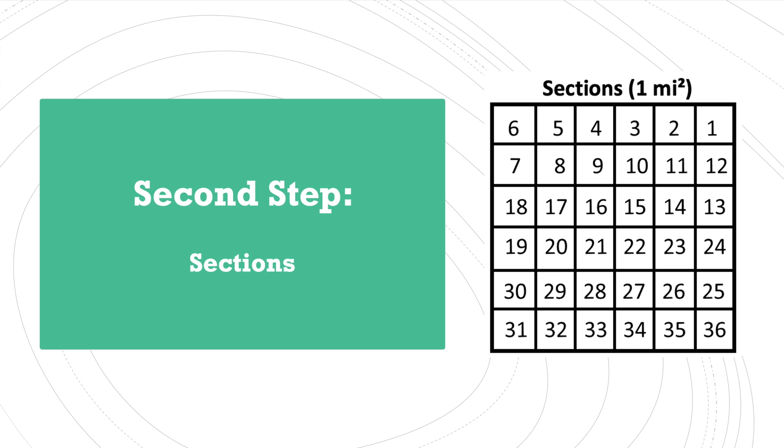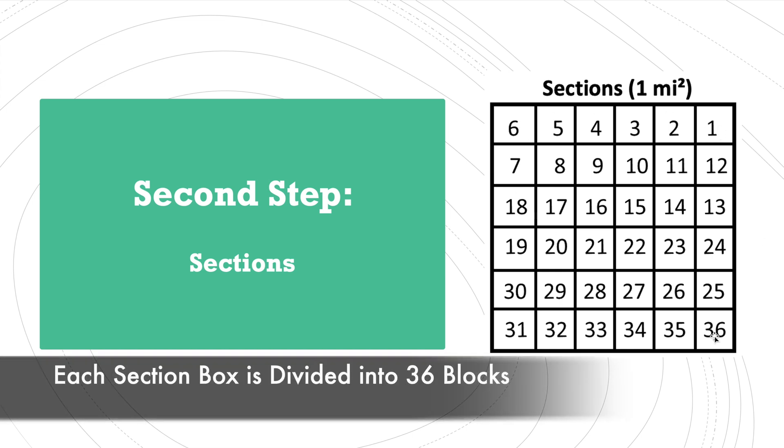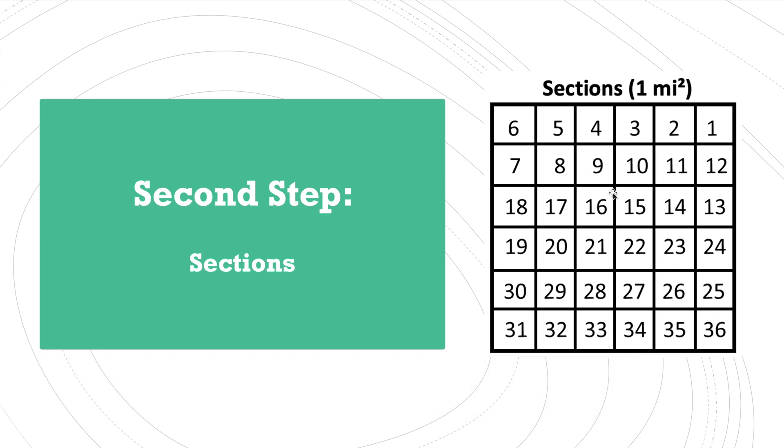So let's observe what a section box would look like. Step 2, or the second step, is our sections. It goes 1 through 36, which makes sense because we're taking one of our larger boxes and subdividing it. Now the numbering is unique: it starts in the top right hand corner, and I call it the snake method because it zigzags back and forth until it reaches all the way to 36.